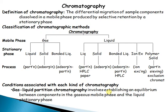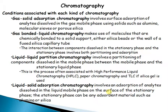Each kind of chromatography involves establishing an equilibrium between components in the mobile and stationary phases. Gas-liquid chromatography involves equilibrium between a gaseous mobile phase and a liquid stationary phase. Gas-solid adsorption chromatography involves surface adsorption of analytes from the gas mobile phase onto solids such as alumina, molecular sieves, or porous silica. Gas-bonded liquid chromatography uses molecules chemically bonded to a solid support, such as silica or fused silica capillary walls, with interactions involving both partitioning and adsorption.